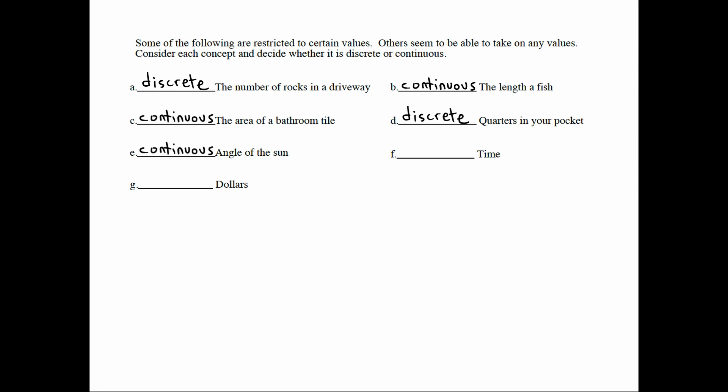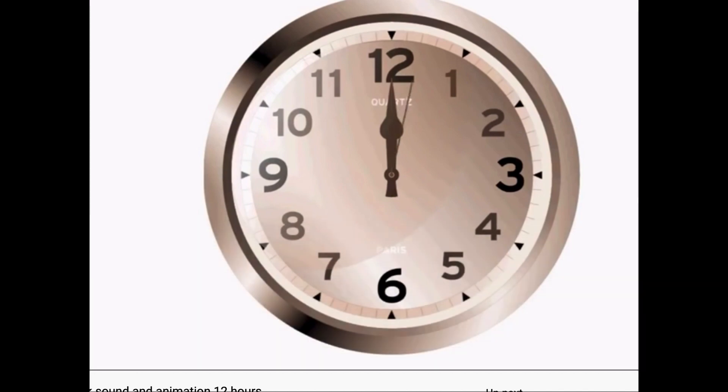Angle of the sun is continuous. What about time? I have a few videos that I found on YouTube which can explain time. This first video is of a ticking clock. Notice that the second hand does not sweep through all the different positions. Only certain positions are allowed, and it holds those positions for a full second before jumping instantaneously to the next. So this is a discrete clock. But does that mean that time itself is discrete?